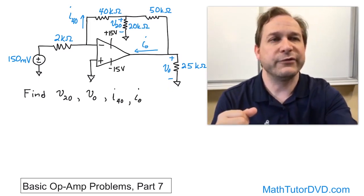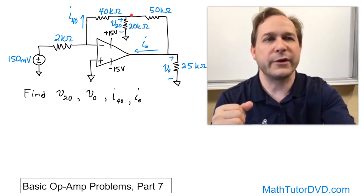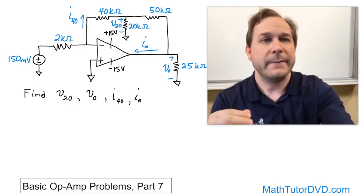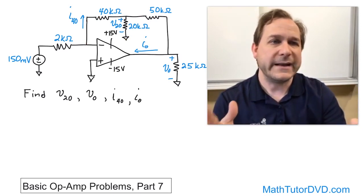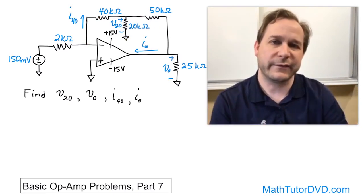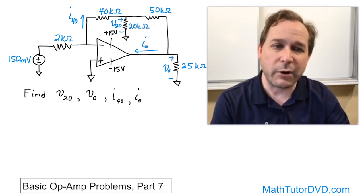We want to find a Kirchhoff voltage loop to go up and around some sort of way, either this direction back to ground or this direction back to ground. But either way, we'll need to know the current through this resistor to find its voltage drop. Otherwise, we won't be able to make any progress.